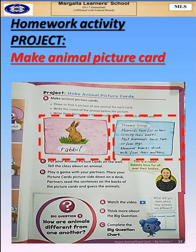You see a rabbit, and we have discussed about the rabbit on the other side of the card. For example, rabbit belongs to the mammal group. Mammals have fur or hair covering their bodies. Most mammals have two or four legs. Mammal babies drink milk from their mothers. You see how you are going to write it? This will be a fun activity.